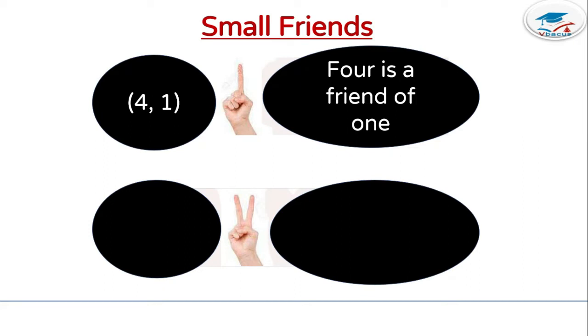Next figure, how many fingers are open? 2. How many fingers are closed? 3. So, 3 is a friend of 2. You can write it as 3, 2.